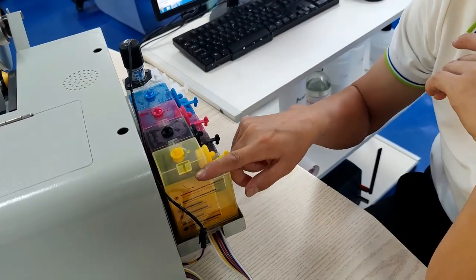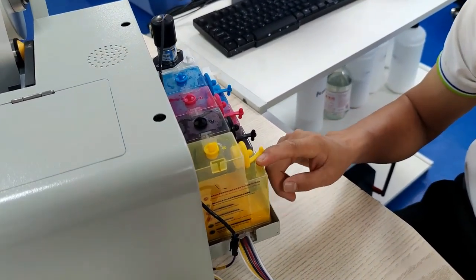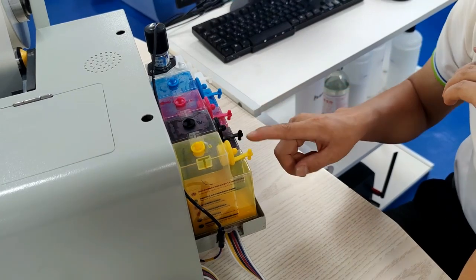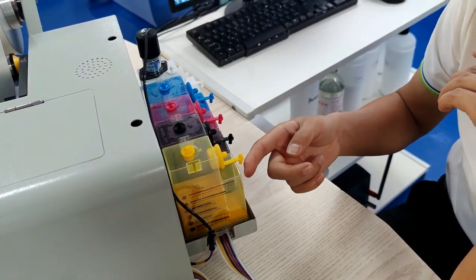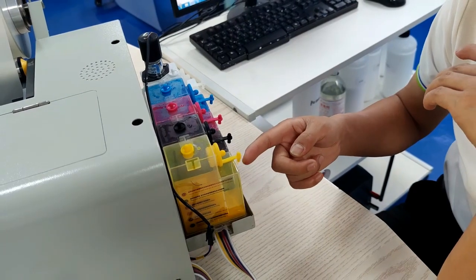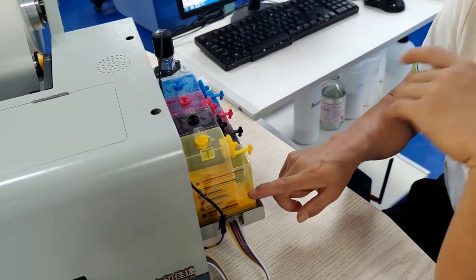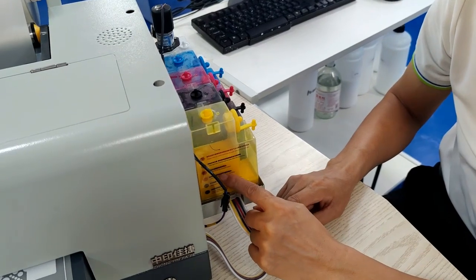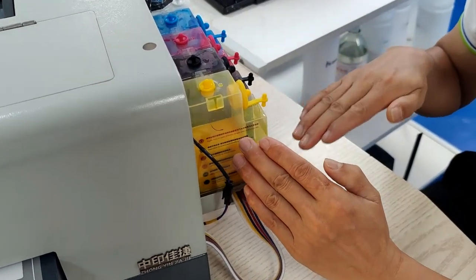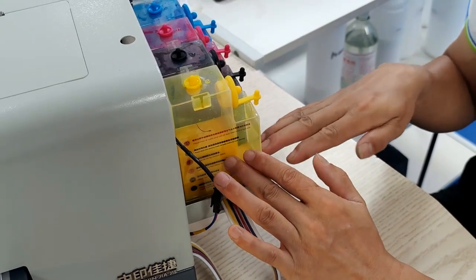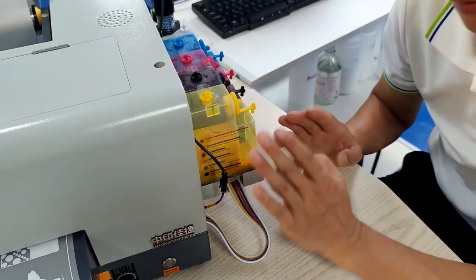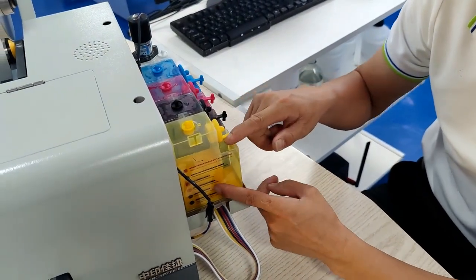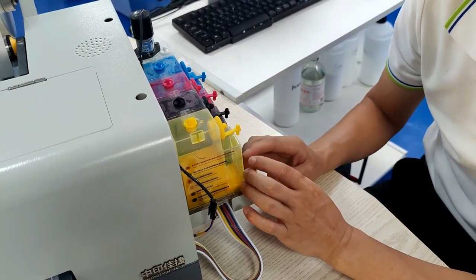The ink capacity is about 200ml for each color. The front side has a smaller tank for the air plant, keeping air inside this small bottle and ink into the big tank. This can keep the system more stable when working.